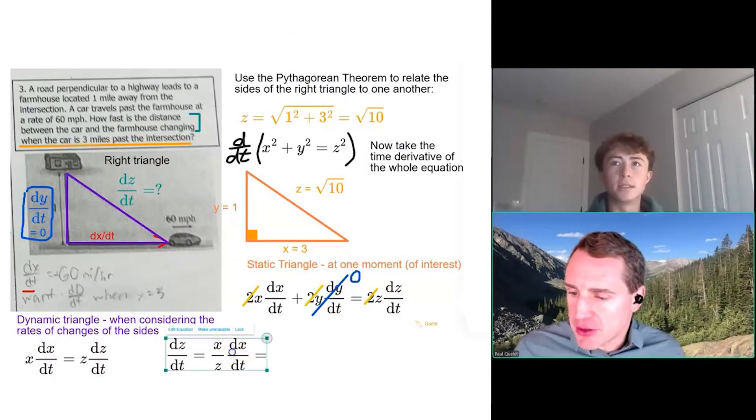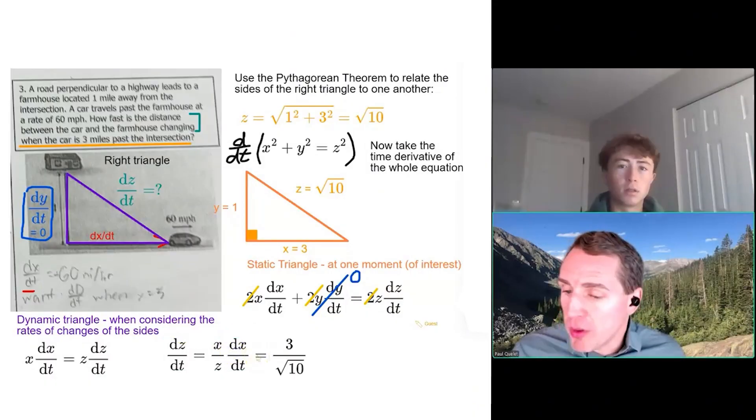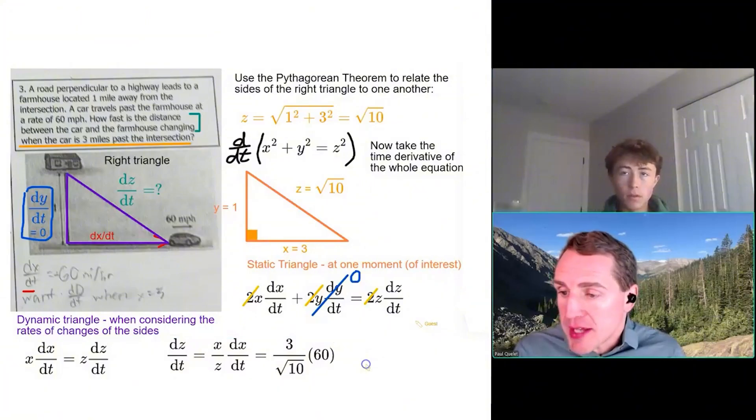So x is 3, z is square root of 10. We need dx/dt. So I think it's 60, right? That's where the 60 miles per hour comes in. Yeah, so it's 180 over the square root of 10.